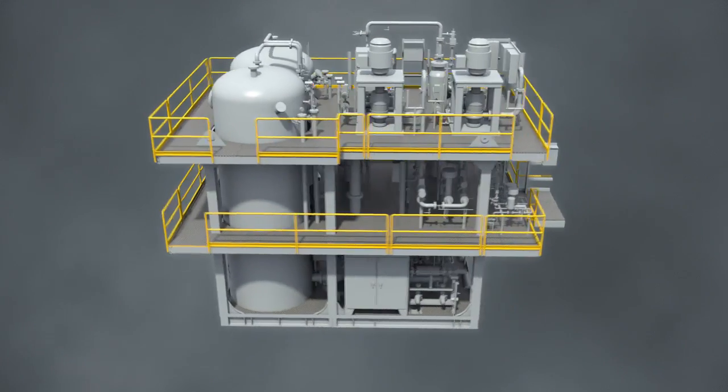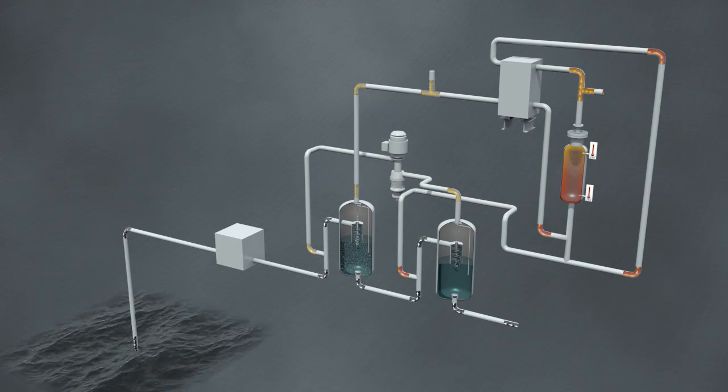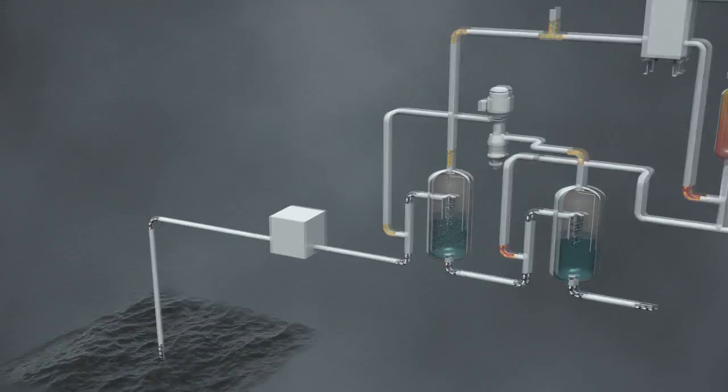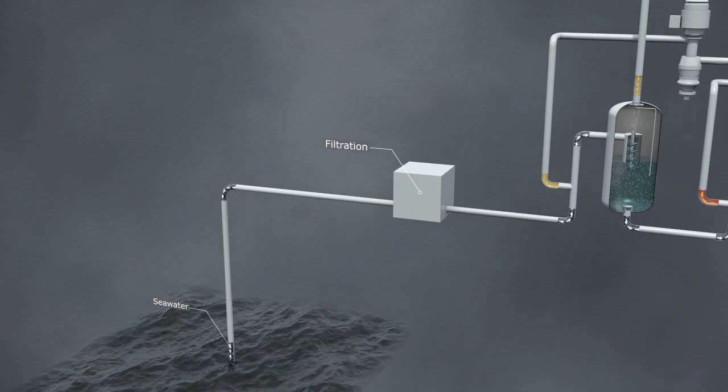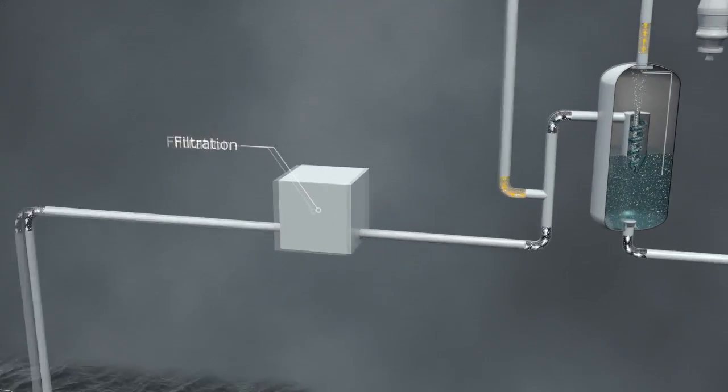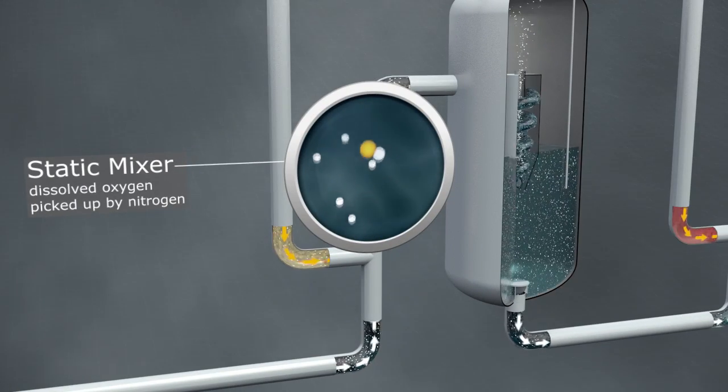Let's take a closer look at the compact Meenox two-stage edition. It is an effective and chemical-free process. The seawater is pumped into the Meenox unit where the water is mixed with pure nitrogen in a static mixer. The dissolved oxygen is picked up by the nitrogen.